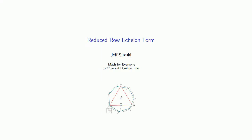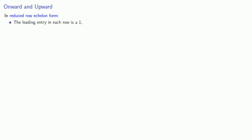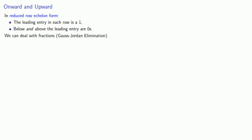Sometimes it's convenient to go farther in our row reduction and to produce what's called reduced row echelon form. In reduced row echelon form, the leading entry of each row is a 1, and below and above the leading entry are zeros. If you're one of those people who like working with fractions, we can deal with them and apply what's called Gauss-Jordan elimination.